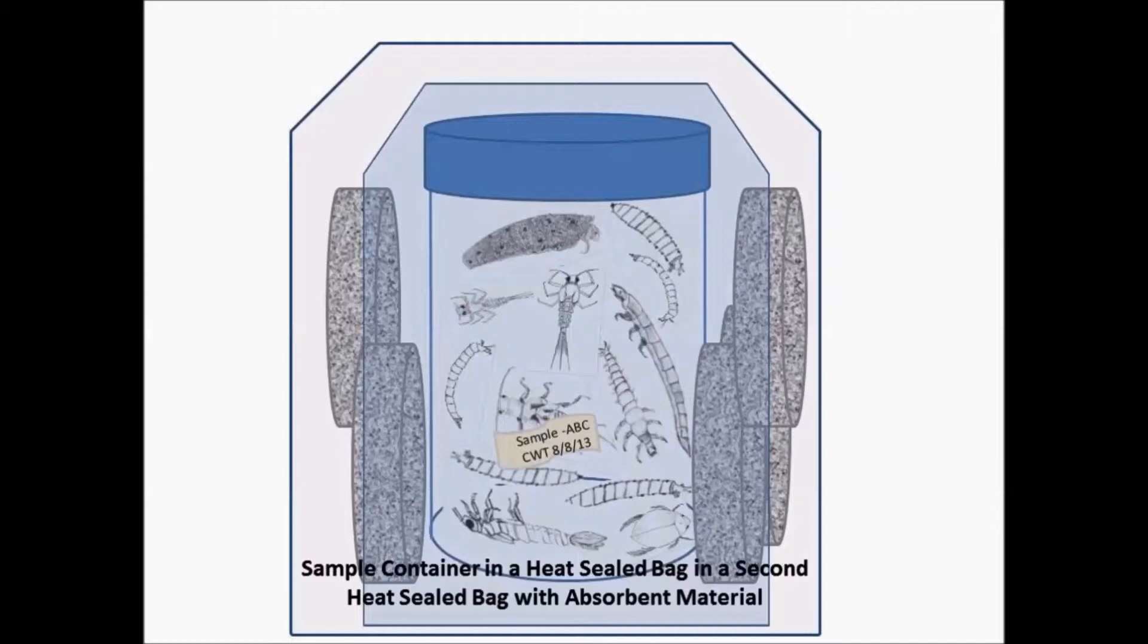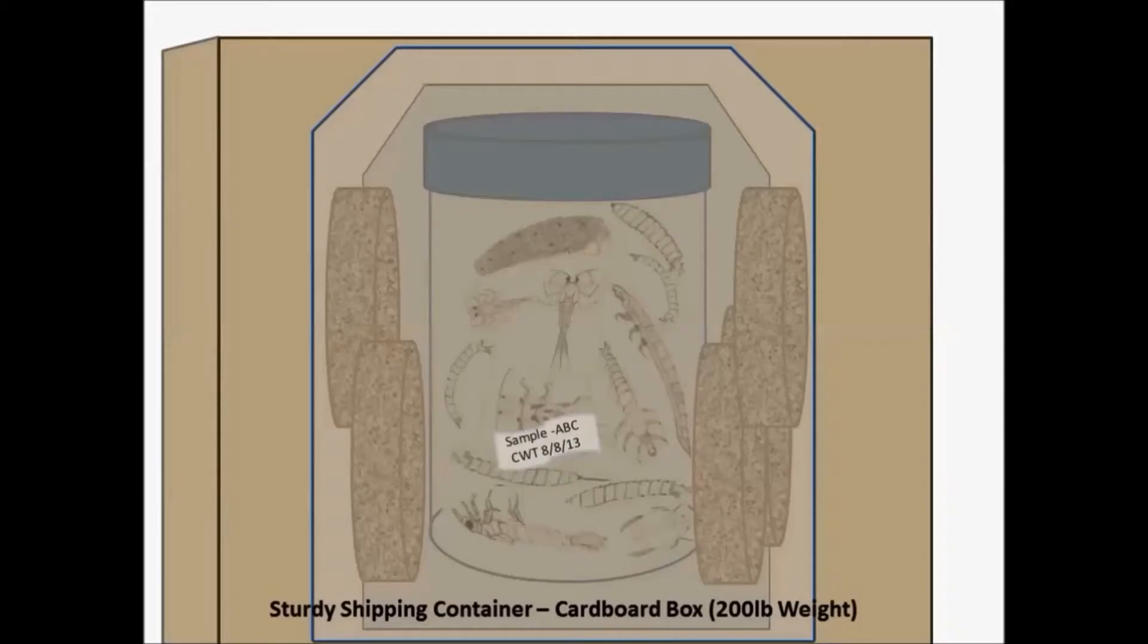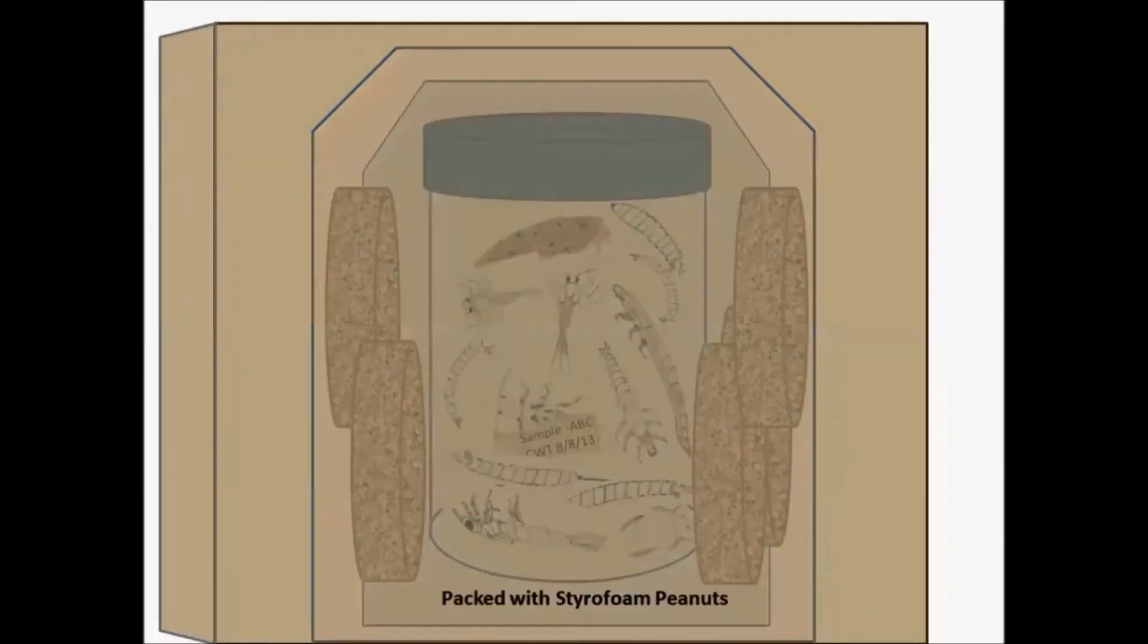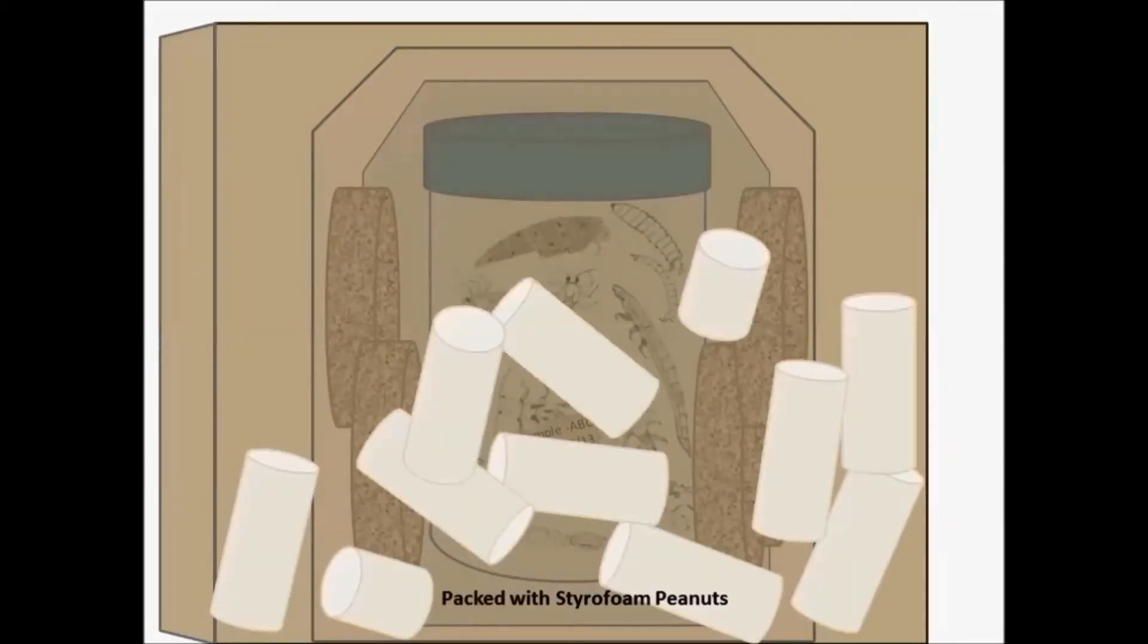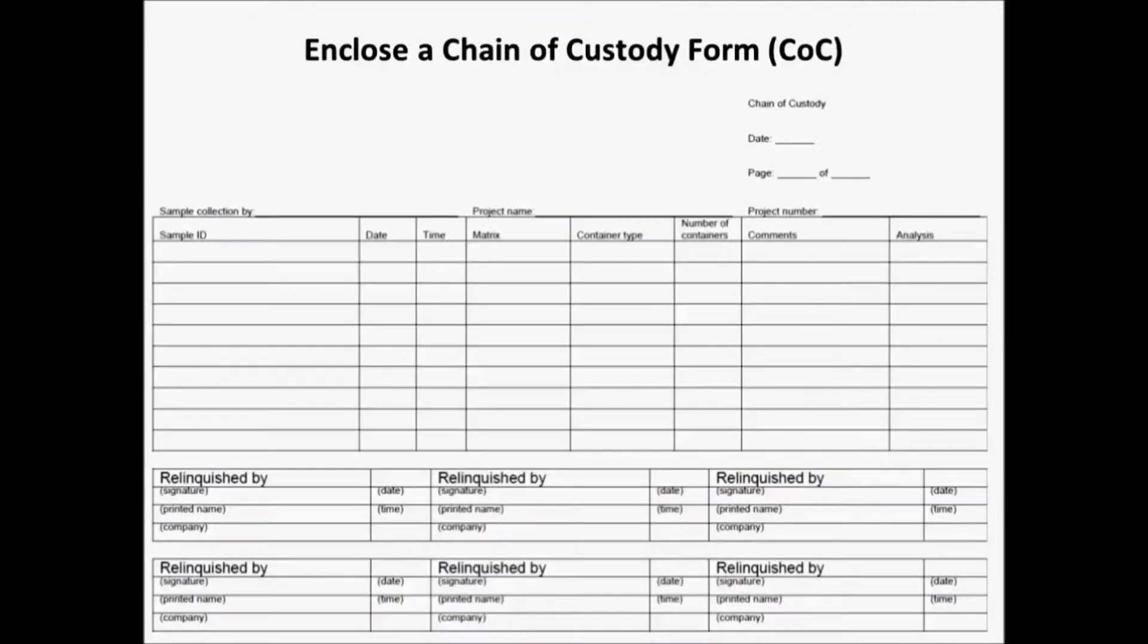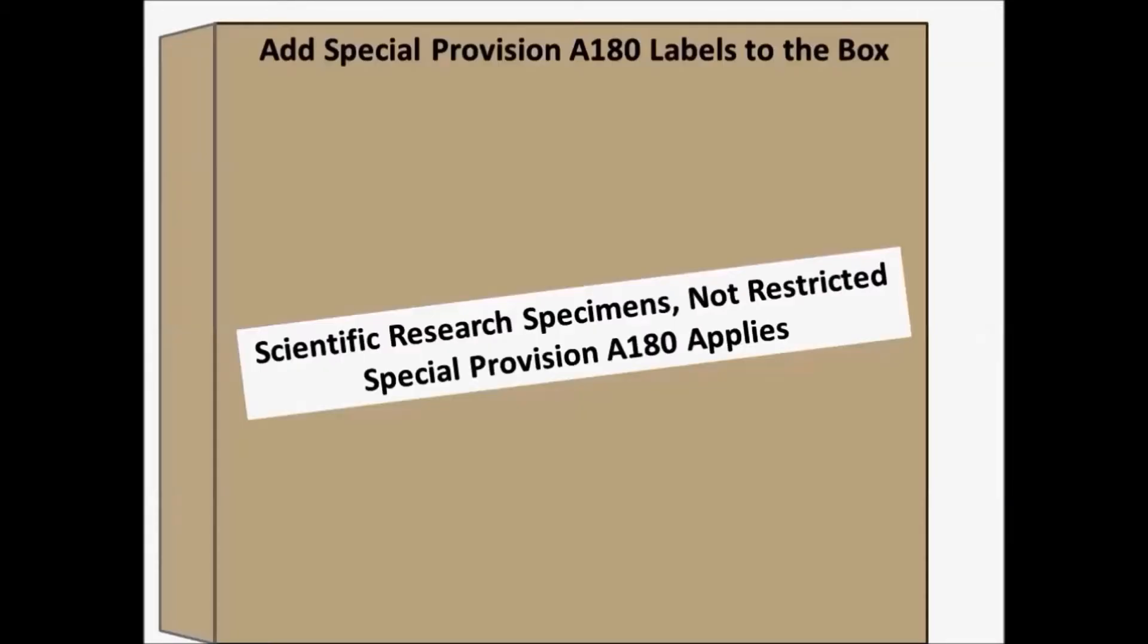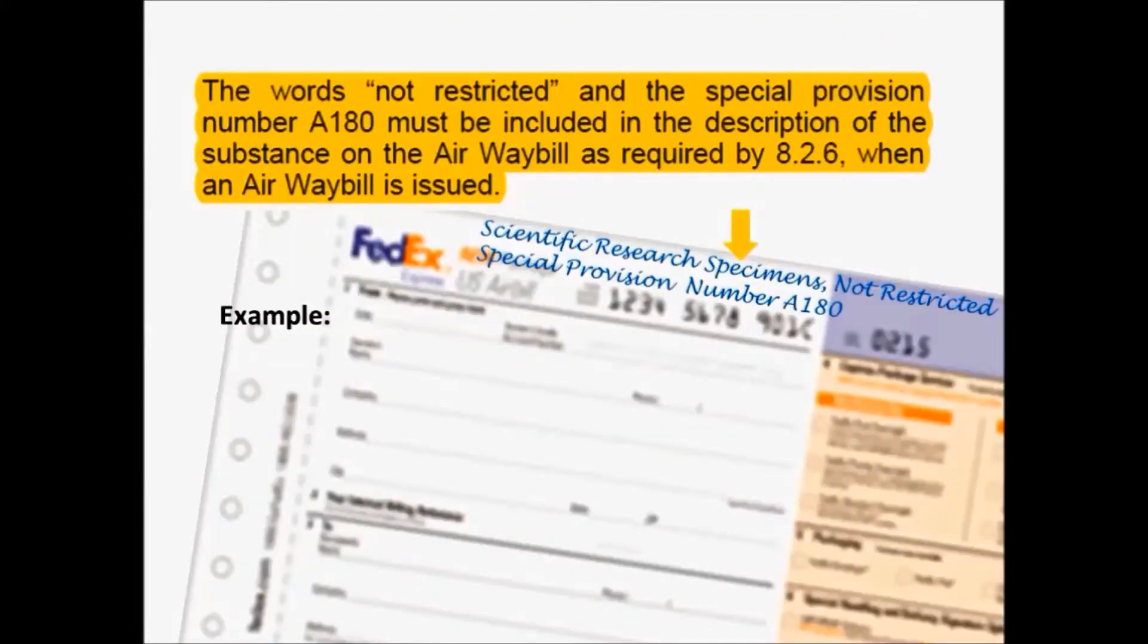You then take your sample and place it within a sturdy shipping container and fill it with styrofoam peanuts. On the outside of the box, add special provision A180 labels. And to your waybill, add the words NOT RESTRICTED and the special provision number A180.